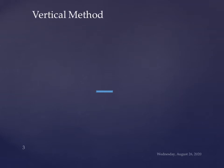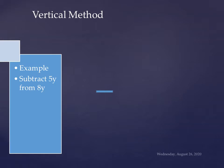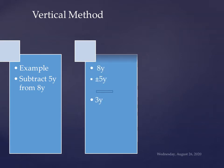Now vertical method of subtraction of two algebraic terms. Question is subtract 5y from 8y. Now we are writing in the column vertically. First we write 8y, second we are writing 5y. 5y is plus and 8y is also plus.